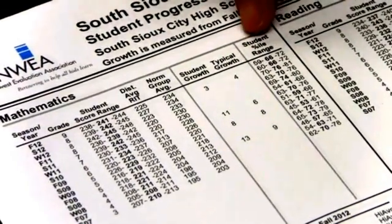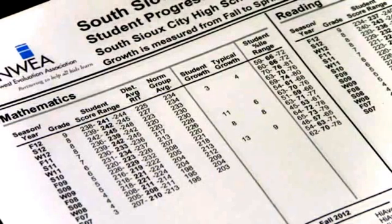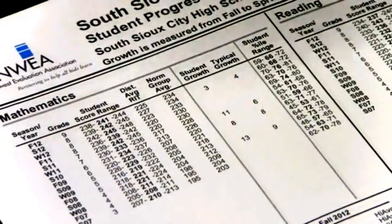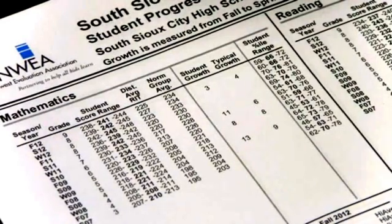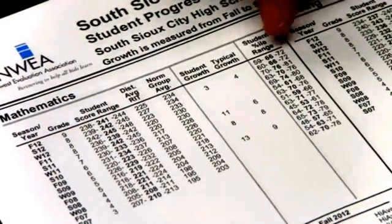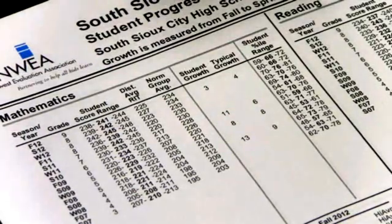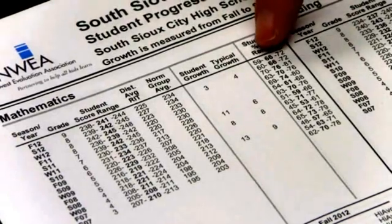The thing about percentile ranks is this: 50 is right in the middle, or average. But there's a range around that middle that is considered an average range — a little below 50 to a little above it. A percentile rank of 66 indicates that her performance is above average. So if you're wondering what this 241 means, she's doing quite well — she's performing above average in math.